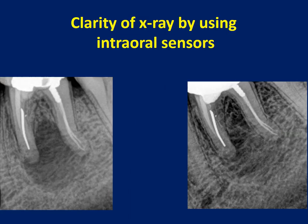Clarity of X-ray can be improved by using intraoral sensors. When dealing with a large lesion and retreatment, we can be very satisfied after a year to see the bone healing and invading this lesion, and the clarity of the picture is very evident.